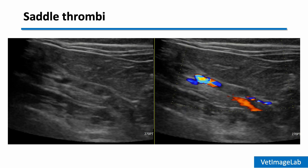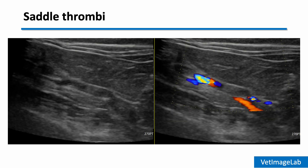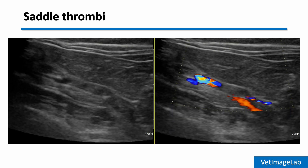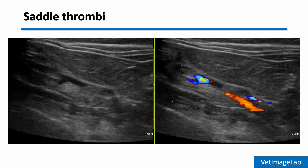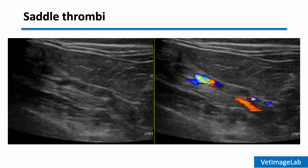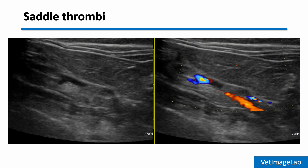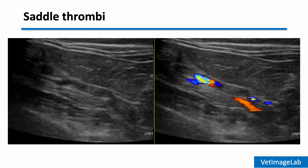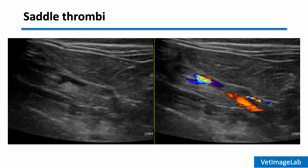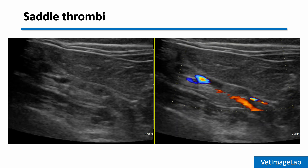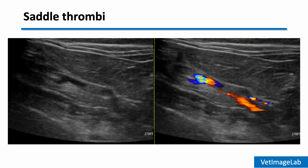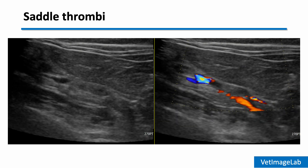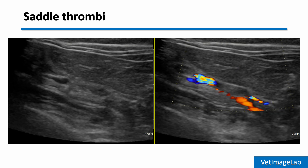Let's take a look at the terminal aorta in a cat with suspected thromboembolism. On the left, a thrombus appears as a hyperechoic structure within the vessel lumen at the aortic bifurcation, right where the aorta splits into the external iliac arteries. On the right, the color Doppler shows a filling defect — a clear absence of color flow at the site of the thrombus. This combination of direct thrombus visualization and abnormal Doppler flow is highly suggestive of a saddle thrombus, one of the most serious complications of advanced HCM in cats.